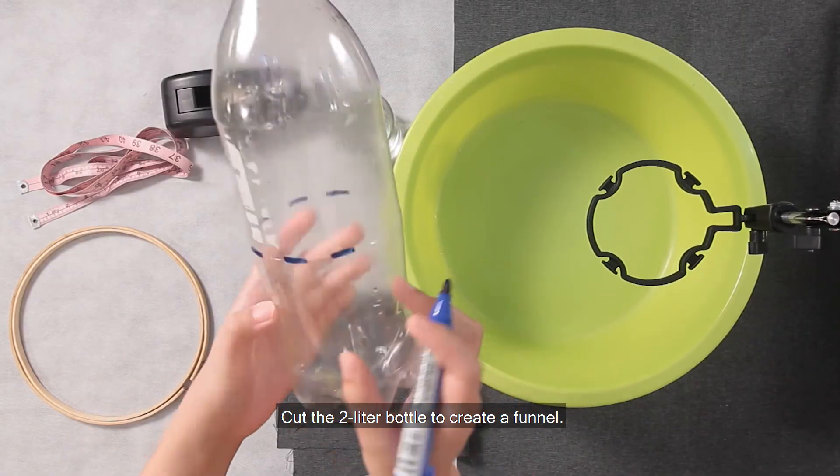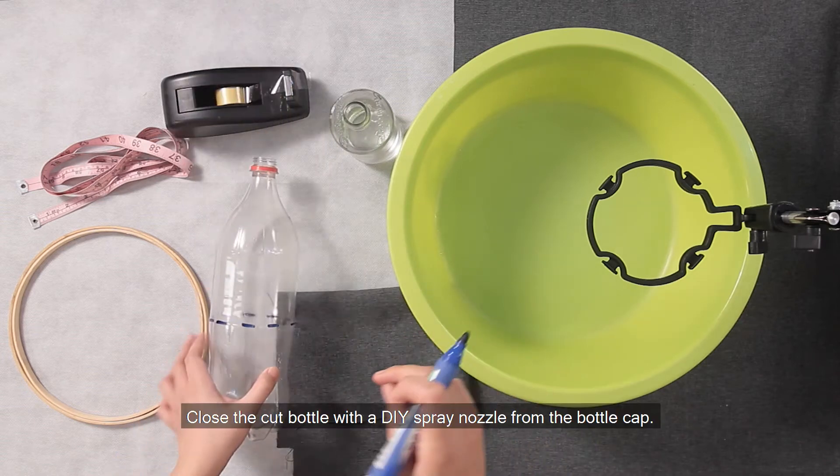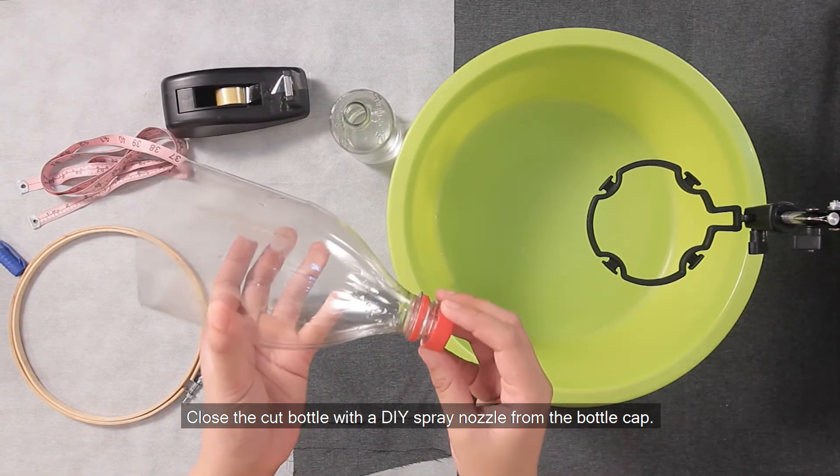Cut the 2-liter bottle to create a funnel. Close the cut bottle with the DIY spray nozzle from the bottle cap.